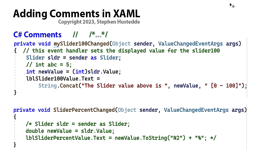You're already familiar with how to write comments in C# code. We can do single-line comments with two slashes, and we can do block comments with a slash-asterisk to start and an asterisk-slash to end. We might use that block comment to remove some code that we don't want to use anymore but don't necessarily want to get rid of for reference purposes.